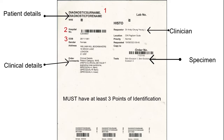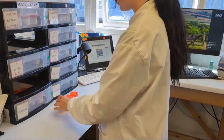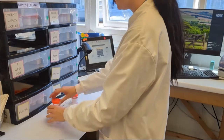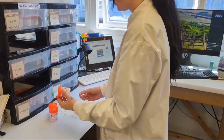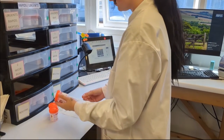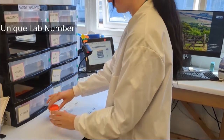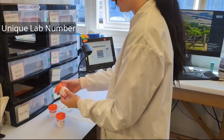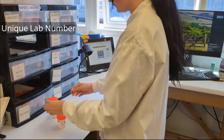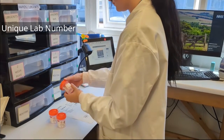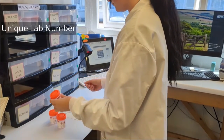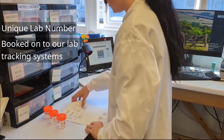Clinical details are required as this will determine how the specimen is treated. Once the details on the specimen container and request card have been carefully checked, specimens are given a unique laboratory number which will stay with the specimen throughout all stages of the lab process. The specimens can then be booked onto the lab IT and tracking systems.